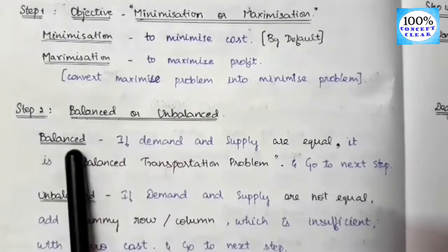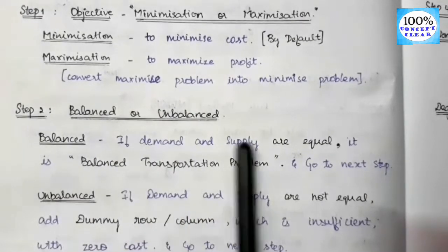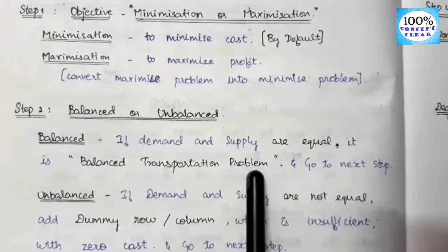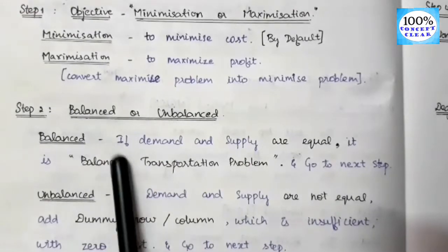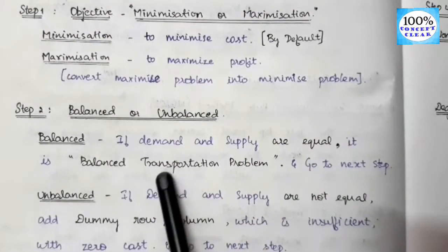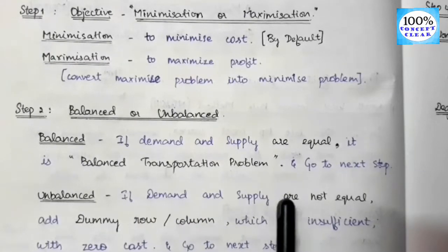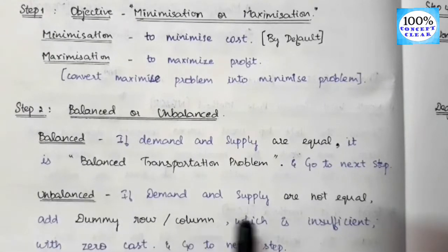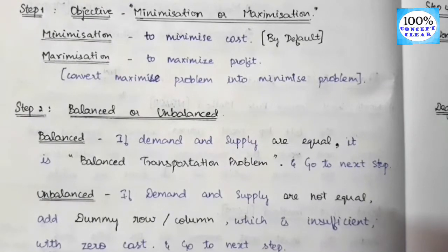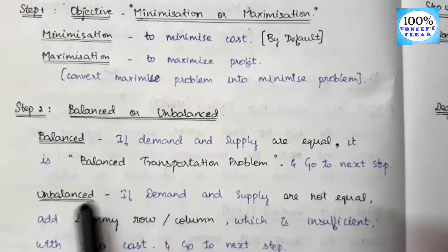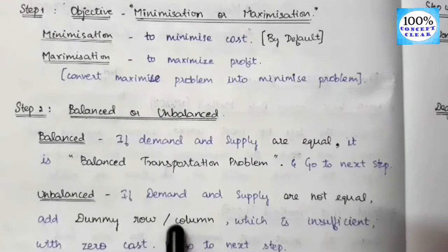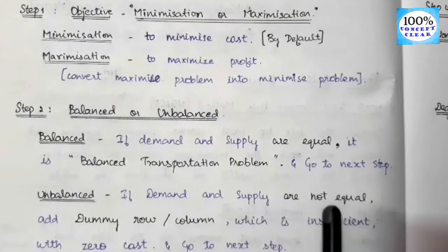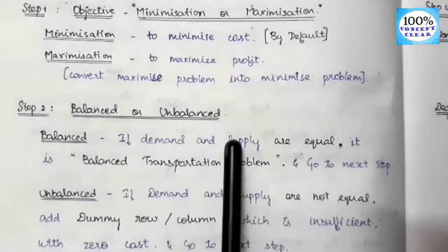Step 2: check whether the problem is balanced or unbalanced. If demand and supply are equal, it is a balanced transportation problem and we go to the next step. If demand and supply are not equal, it is unbalanced — we must add a dummy row or column with zero cost and then proceed to the next step.